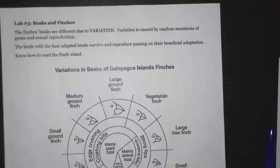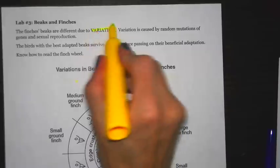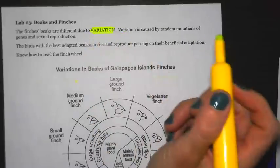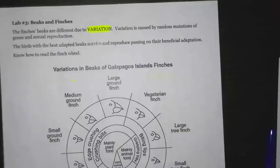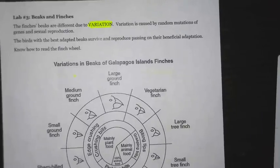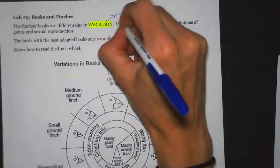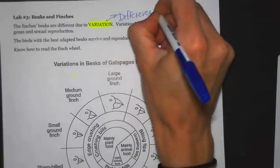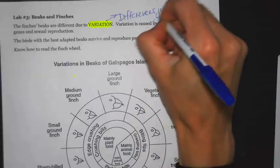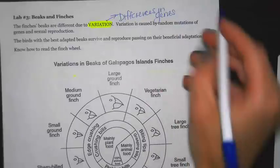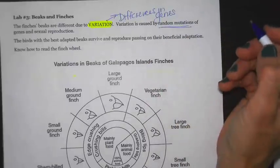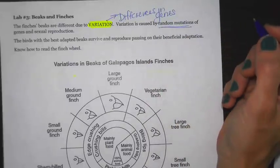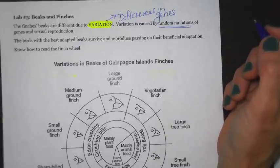Lab number three is Beaks of Finches. The first statement says finches' beaks are different due to variation. This is really an evolution concept — variation is caused by three different factors. One is random mutations: a mutation is when the genetic code changes, so looking at A's, T's, C's, and G's, even just one letter changed is going to have an effect.